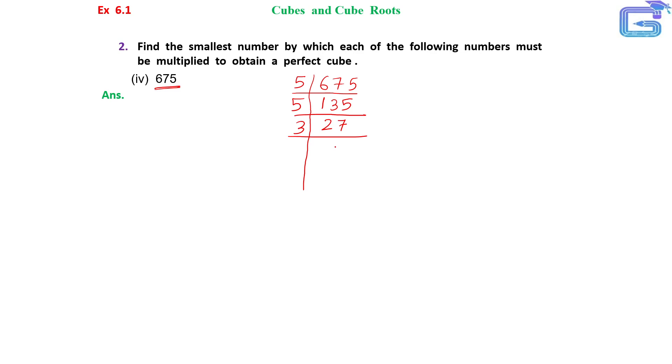Now divide it by 3. 3 nines are 27. 3 threes are 9. 3 ones are 3. So here we get the factors.